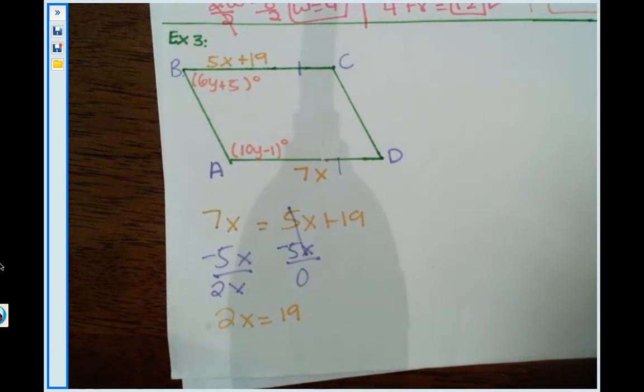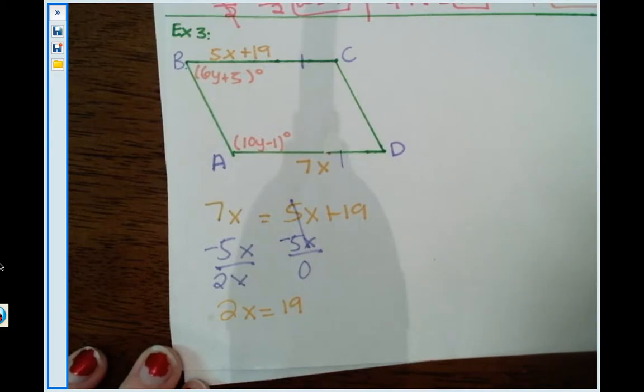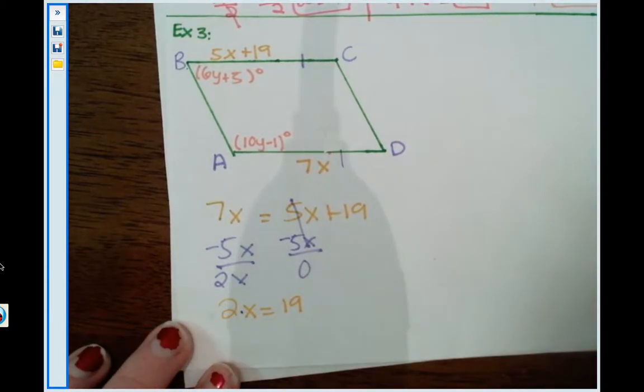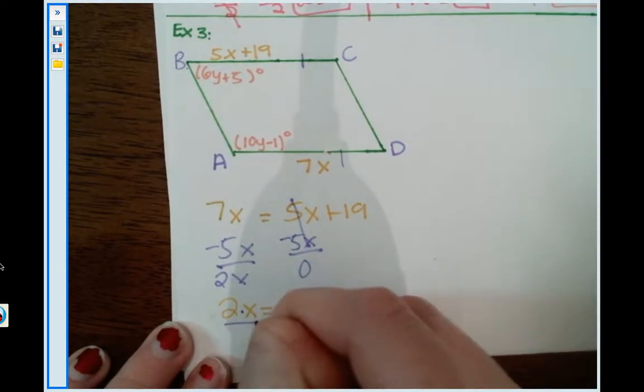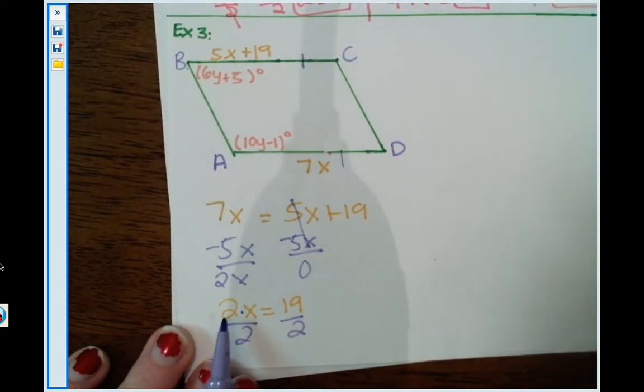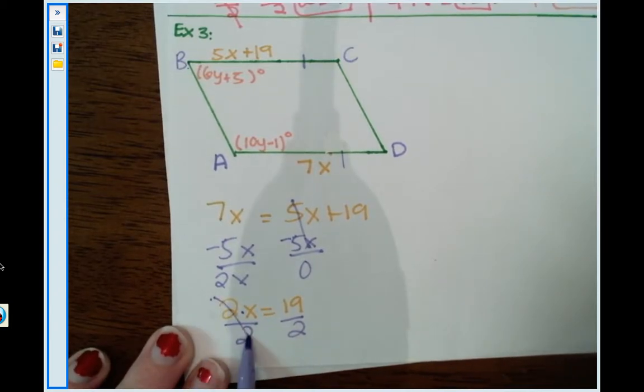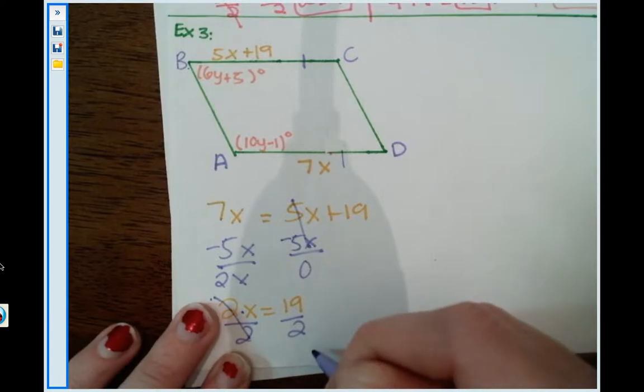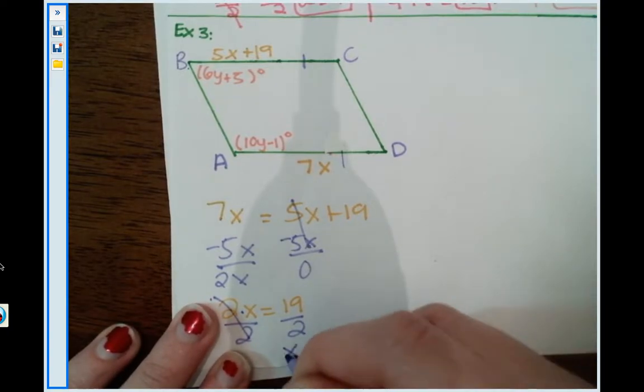And then how do we bring 2 to the other side? Got to get x by itself now. Well, 2 is secretly multiplying to the x. So the way we bring it to the other side is by dividing that thing on both sides. So 2 divided by 2 cancels and turns to 1. 19 cannot be divided by 2. So x is simply 19 halves.